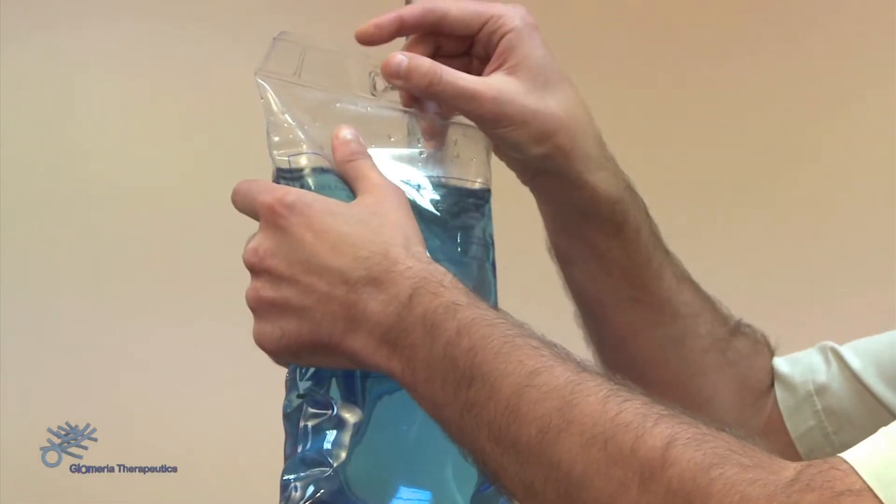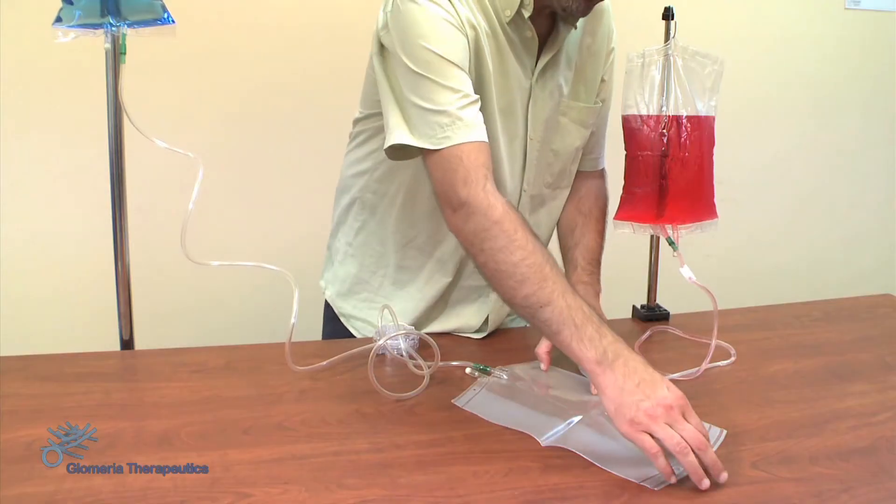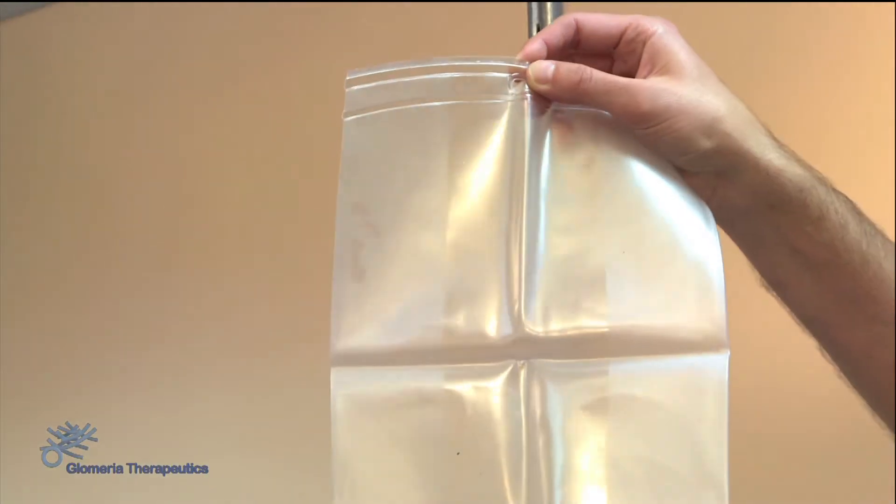To start, we hang the full bag on the lowest hook on the stand. We hang the receptacle bag on the highest hook.